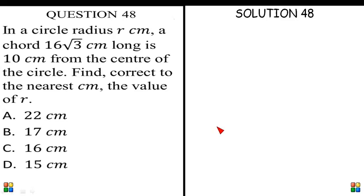Question 48. In a circle radius R centimeters, a chord 16√3 centimeters long is 10 centimeters from the center of the circle. Find, correct to the nearest centimeter, the value of R.